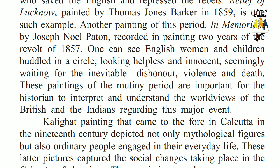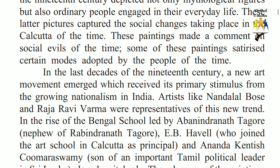One can see English women and children huddled in a circle, looking helpless and innocent, seemingly waiting for the inevitable — dishonour, violence and death. These paintings of the mutiny period are important for the historian to interpret and understand the world views of the British and the Indians regarding this major event. Kalighat painting, which came to the fore in Calcutta in the 19th century, depicted not only mythological figures but also ordinary people engaged in their everyday life. These latter pictures captured the social changes taking place in Calcutta of the time and made a comment on social evils of the time.